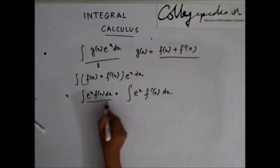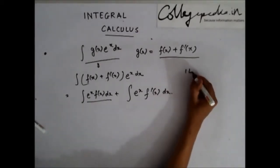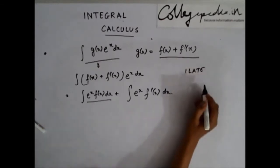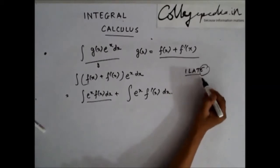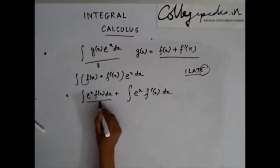Now, I have to integrate this. If I follow this ILATE thing, I see that, assuming that f(x) can be any of this, exponential comes at the last. So, I'll take this as my first function and e^x, I'll take as my second function.